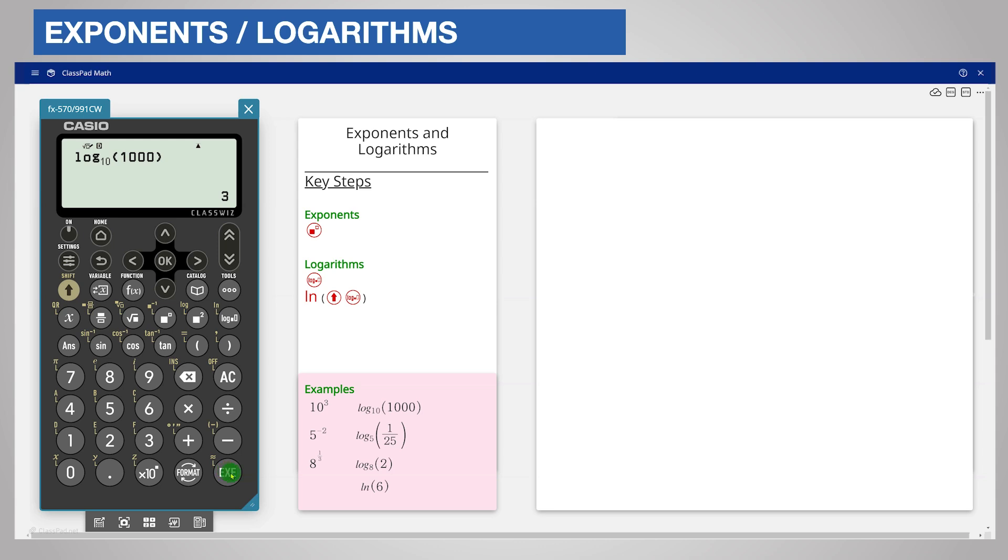On the FX991CW you can also use the log key. Press log which is shift square, enter the value 1000, close the bracket and then the Execute key. The log key is not available on the FX83 or 85CW, so use the log base key instead as I have already shown.